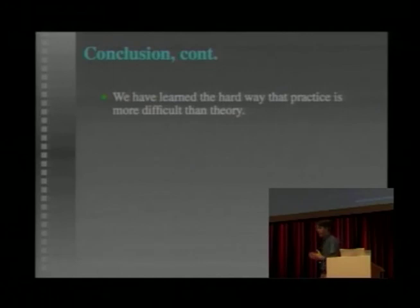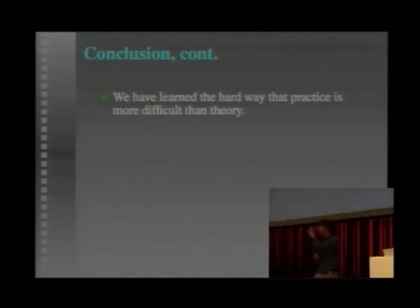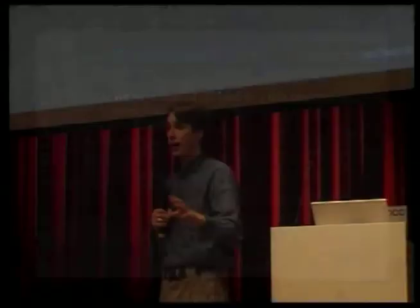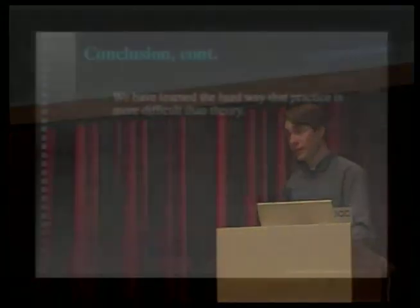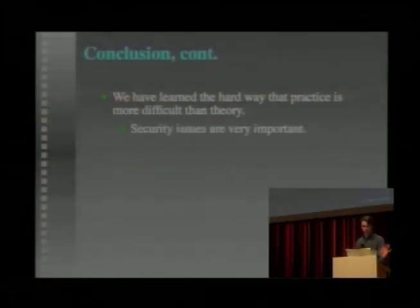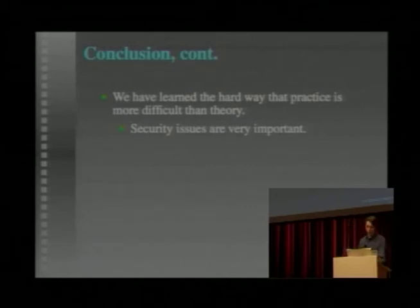In the next version of Freenet — Freenet 0.7, which will incorporate what we've been talking about here — we've really tried to apply a lot of lessons to avoid the mistakes we've made in the past. But I'm sure we're going to discover a whole new set of mistakes. You can never underestimate the difficulty of actually implementing something, particularly peer-to-peer networks.